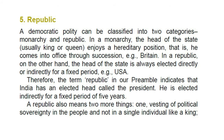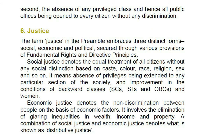5. Republic: a democratic polity can be classified into two categories: monarchy and republic. In a monarchy, the head of the state, usually a king or queen, enjoys a hereditary position, i.e., he comes into office through succession — for example, Britain. In a republic, the head of the state is always elected directly or indirectly for a fixed period — for example, USA. Therefore, the term 'republic' in our preamble indicates that India has an elected head called the President, who is elected indirectly for a fixed period of five years. A republic also means two more things: first, vesting of political sovereignty in the people and not in a single individual like a king; second, the absence of any privileged class and hence all public offices being open to every citizen without any discrimination.